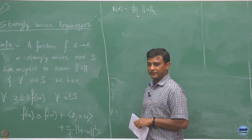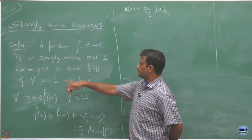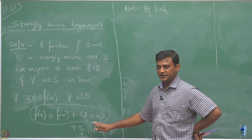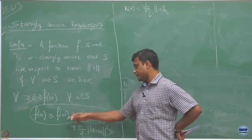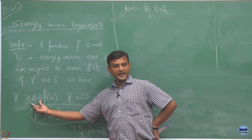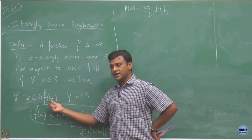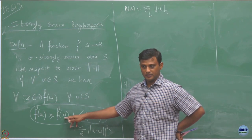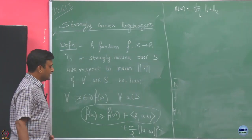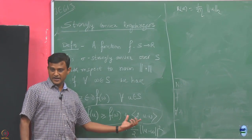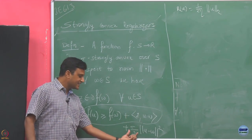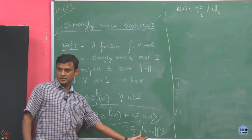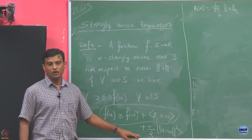This is the definition of a strongly convex function with parameter sigma. You see that this part you have already defined — we know that a convex function satisfies this part, where z is the subgradient of your function f computed at point w. This tangent passes through every point w. But now what we are saying is: in addition to this lower bound, if I add this extra factor, I have increased my lower bound by this much amount, and the entire thing continues to hold as a lower bound on my function f.